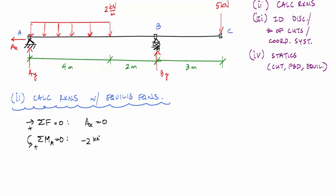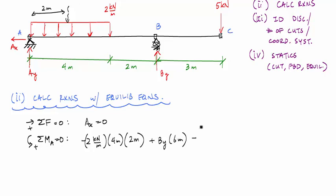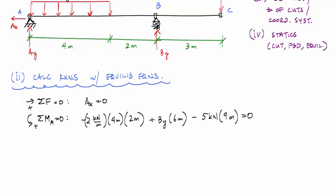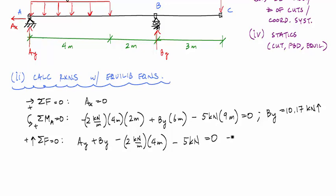Taking moments about A: the distributed load resultant is negative two kilonewtons per meter times four meters, with its resultant at two meters from A. So that's minus eight kilonewtons times two meters, plus B_y times six meters, minus five kilonewtons times nine meters equals zero. Solving gives B_y equal to 10.17 kilonewtons upward. Then summing vertical forces gives A_y equal to 2.83 kilonewtons.